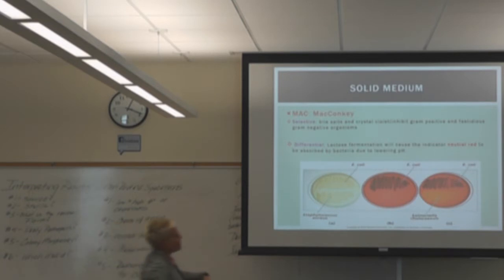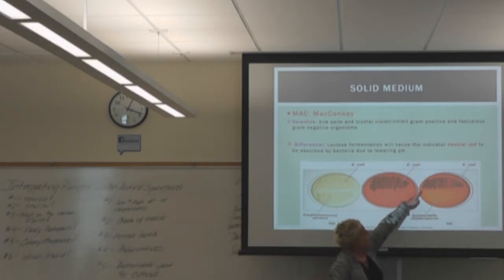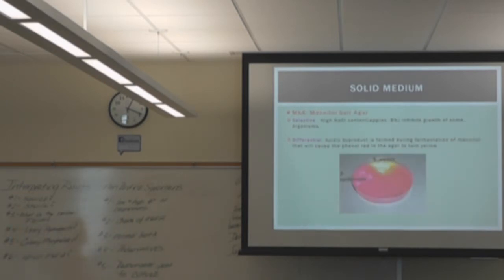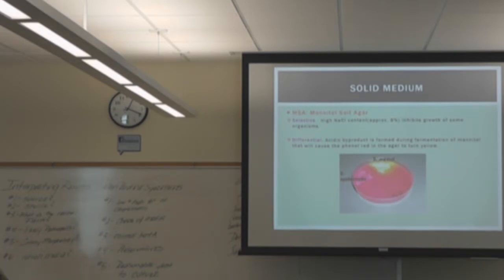You can see the difference on MacConkey. It looks almost black but should be purple — that's E. coli — versus Salmonella as a non-lactose fermenter, which gives a clear brownish color. MSA will look exactly like this when dealing with Staph: bright yellow for aureus versus a fuchsia color for epidermidis. That's exactly how you tell them apart — once you see that, you know you're working with Staph.